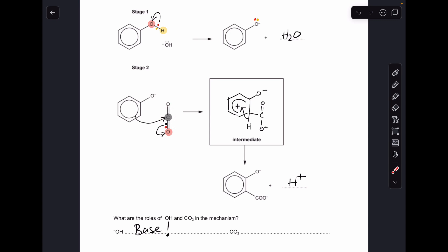And then for the carbon dioxide, what's it doing? It's accepting a pair of electrons from the delocalized ring of pi electrons, so it's acting as an electrophile.